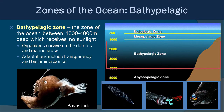We now descend into the bathypelagic zone, which occupies about 1,000 to 4,000 meters deep and receives absolutely no sunlight. Organisms here generally survive on detritus and marine snow coming from the surface, although there are predators as well. Adaptations include transparency and bioluminescence. The anglerfish uses a bioluminescent lure on top of its head to attract prey. One organism uses a red bioluminescent light like a sniper scope that others can't see because nothing is adapted to see red down there. A shrimp spews bioluminescent goo to distract and escape predators.